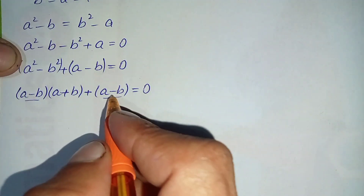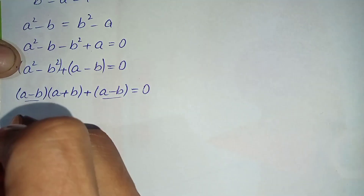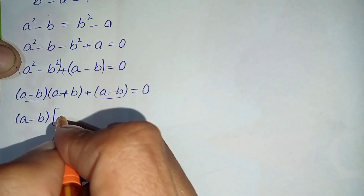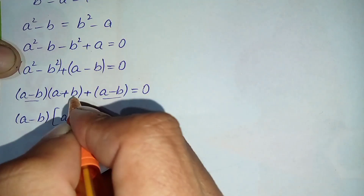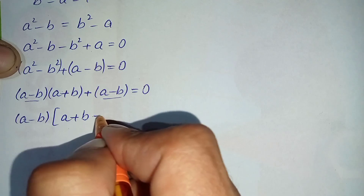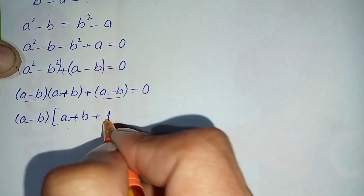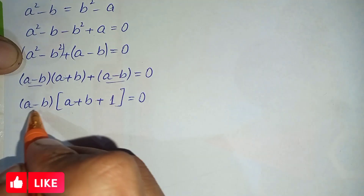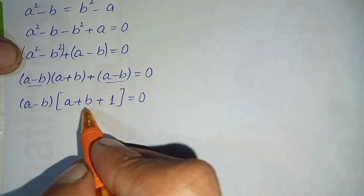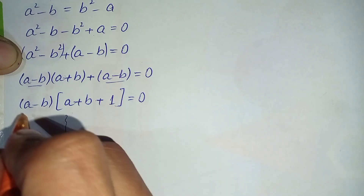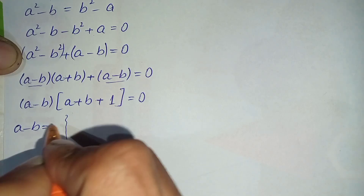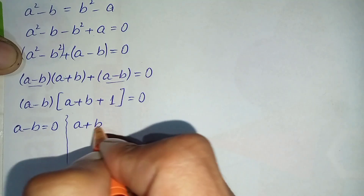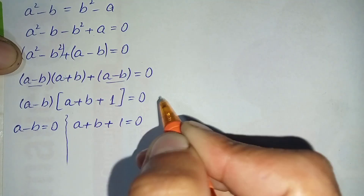Taking (a minus b) as the common factor, we get (a minus b) times (a plus b plus 1) equals zero. There are two possibilities: this term equals zero or this expression equals zero. So either a minus b equals zero, or a plus b plus 1 equals zero.